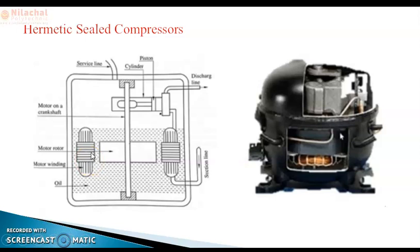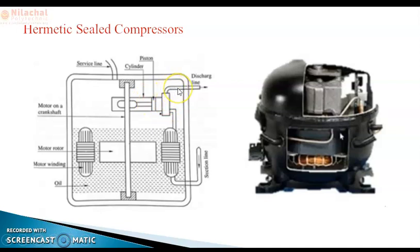To easily understand the working principle, first observe the parts. The motor and compressor share a single shaft — both are on the same single shaft. This is the motor, this is the service light, and this is the reciprocating compressor with the piston and cylinder. This is the suction port, the discharge port, the motor winding, and the oil.